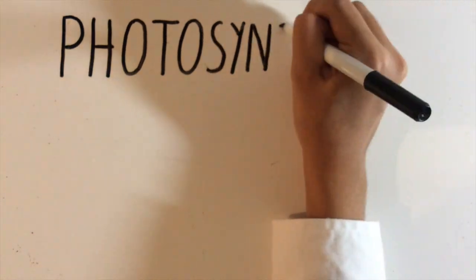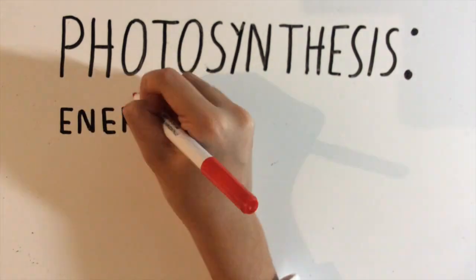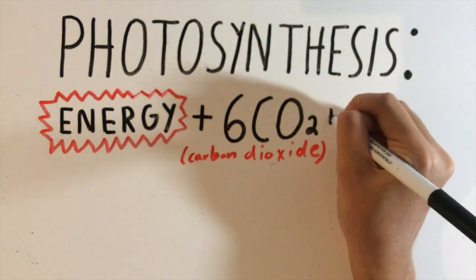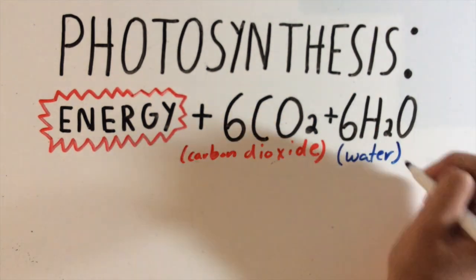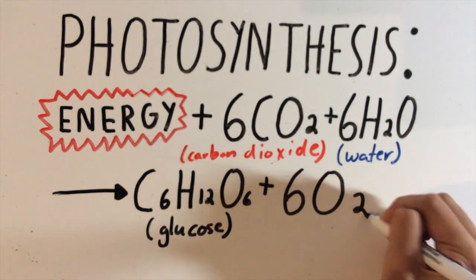The equation that represents the process of photosynthesis is as follows: energy plus 6CO2 plus 6H2O produces C6H12O6 plus 6O2.